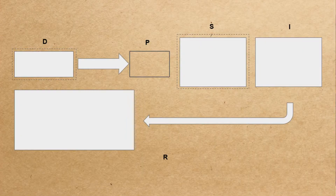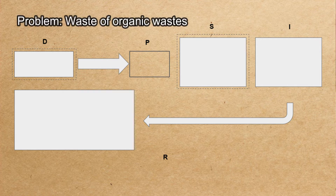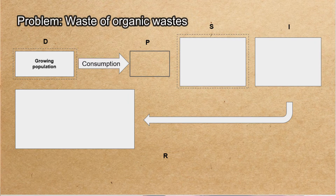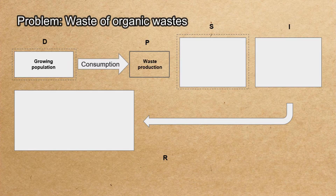I'm going to give you an example to explain the DPSIR model. To start, we need a problem to model and obtain its behavior. In this case, it is the waste of organic waste. As a driving force, which activity generates the waste of organic waste? We are going to focus on one driving force: growing population. For pressure, how does growing population or consumption affect? The answer is through waste production.